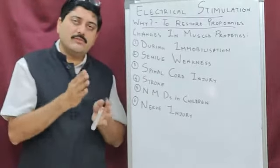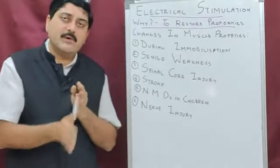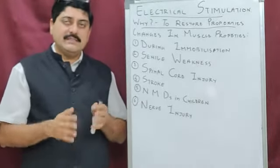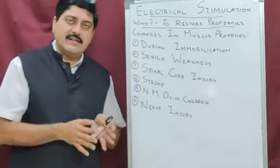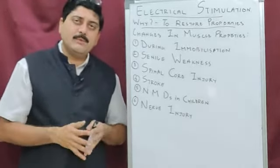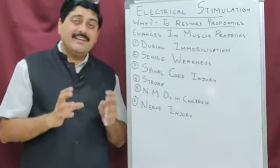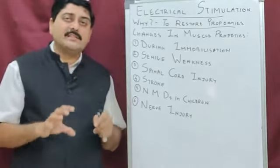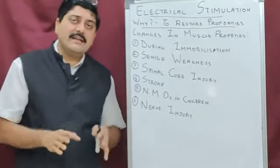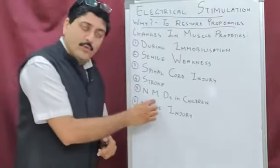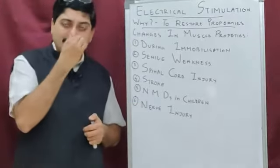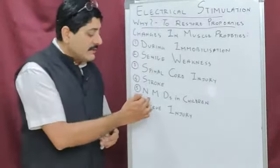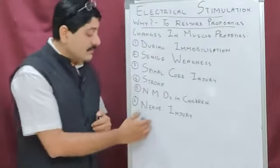Neuromuscular disorders seen in children — either congenital or otherwise — are another indication. Studies have proven that giving an appropriate amount of current with appropriate surge stimulation to the patient can lead to improvement in conditions such as Duchenne muscular dystrophy (DMD) or other muscular dystrophies. So electrical stimulation can be used in neuromuscular disorders as well.